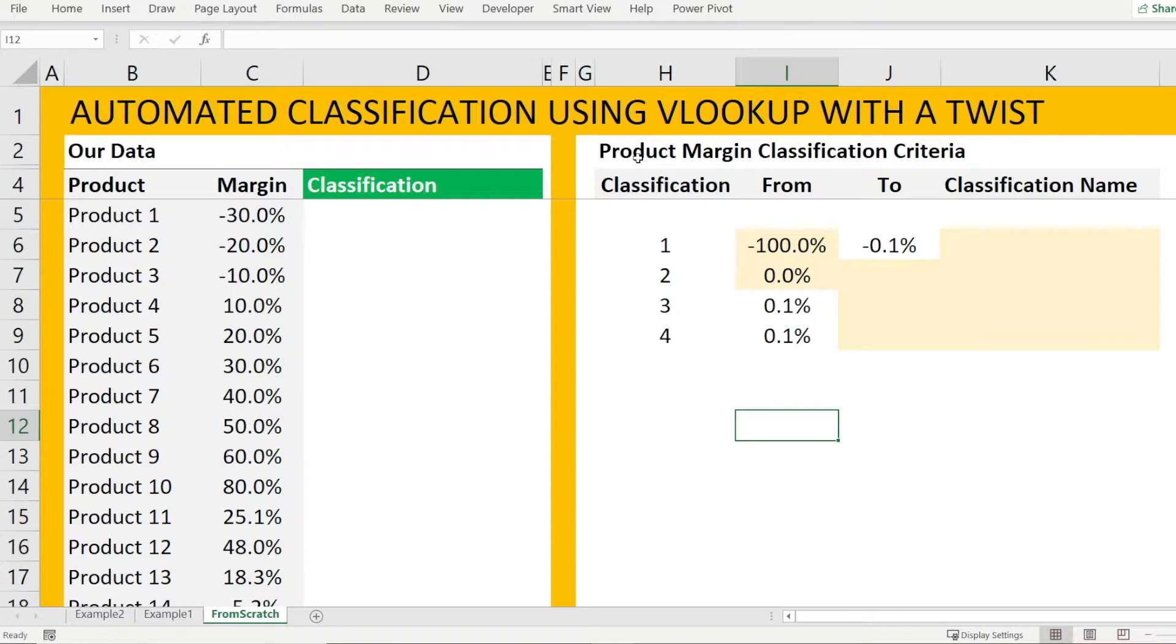First step is to create product margin classification criteria. So previously, we had four classifications. Let's type up the classification name, which is loss making product, low margin, medium, and optimal. And then secondly, let's enter the from and to range. So let's say loss making is anything less than 0% margin. Low can be up to 20, medium 20 to 50, and optimal can be up to 100%.